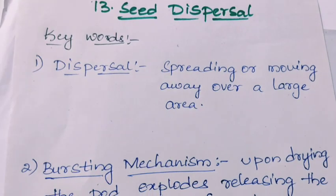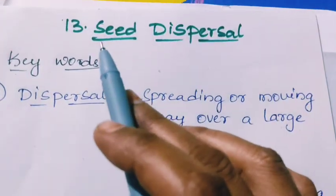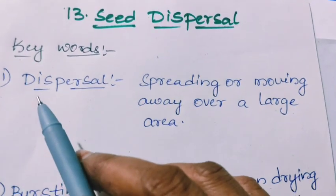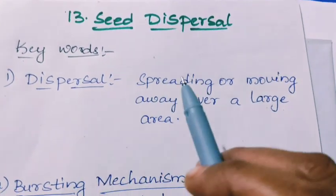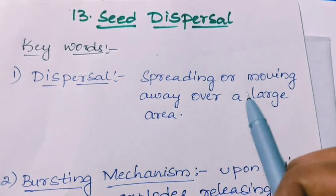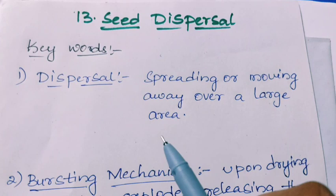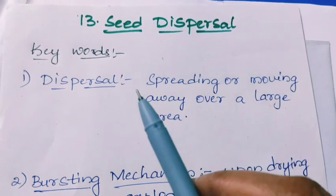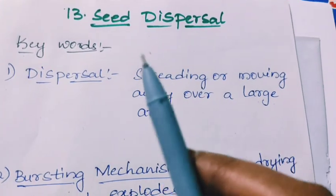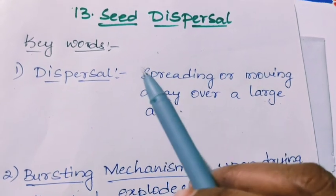Hello students, today we are going to discuss the keywords for the lesson seed dispersal. The first keyword is dispersal. Dispersal means spreading or moving away over a large area. In this context, seeds will be dispersed from one place to another place and grown into new plants.